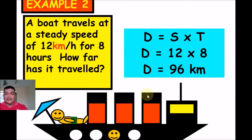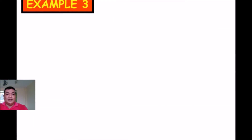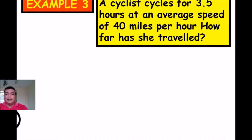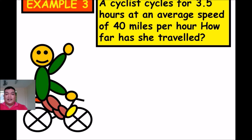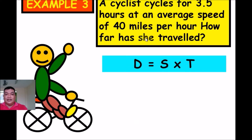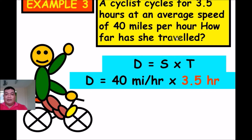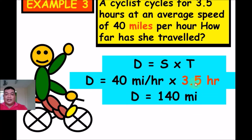Example 3: A cyclist cycles for 3.5 hours at an average speed of 40 miles per hour. How far has he traveled? What is asked is the distance. Speed is 40 miles per hour and time is 3.5 hours. Multiply 40 × 3.5 = 140. Cancel the hours, so the remaining unit is miles. The answer is 140 miles.